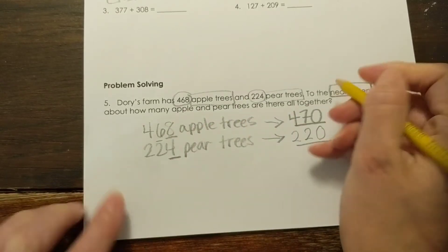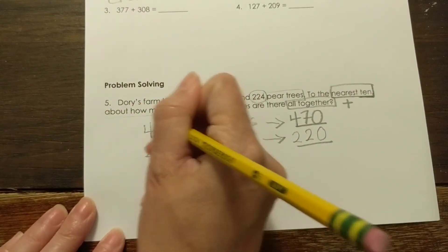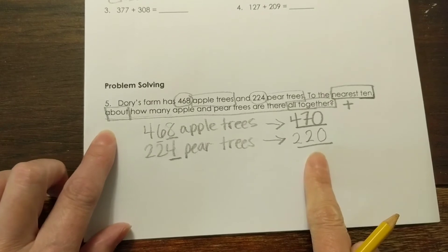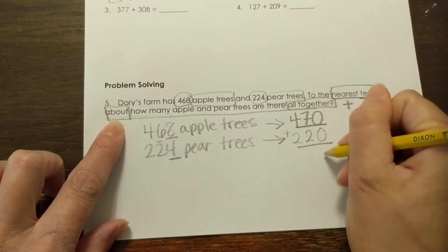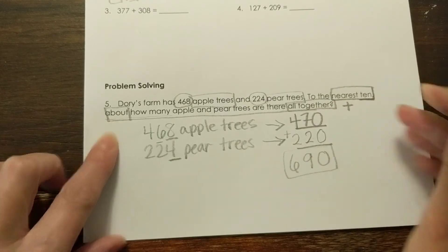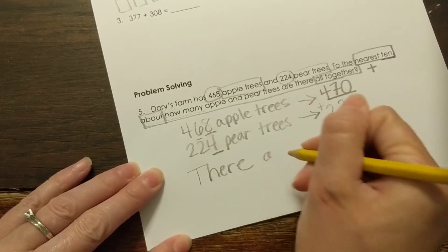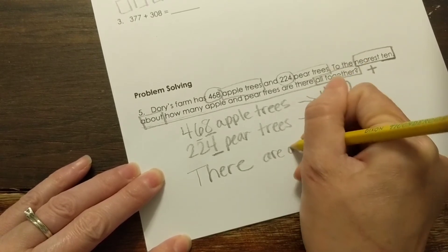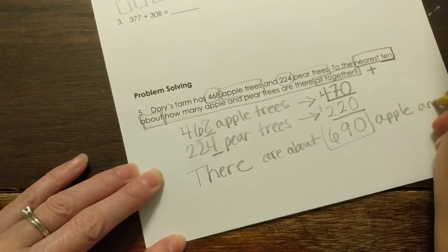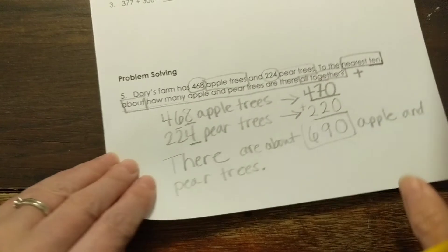So it says, how many are there altogether? Altogether implies that we add or multiply. It says about. Now, this about means that it is okay for me to use my rounded number. Alright, so let's go ahead and add these together. 0 plus 0 is 0. 7 plus 2 is 9. And 4 plus 2 is 6. So then to answer this problem, we would say there are about 690 apple and pear trees.